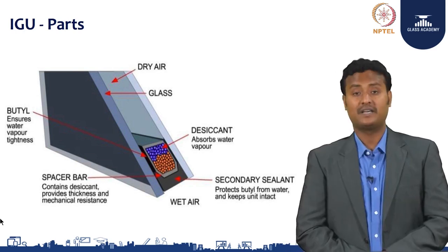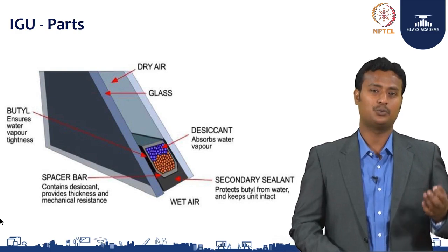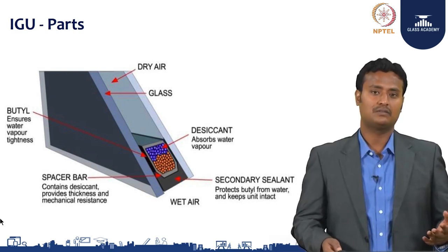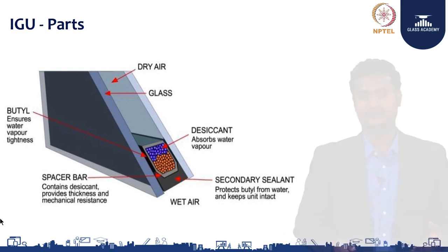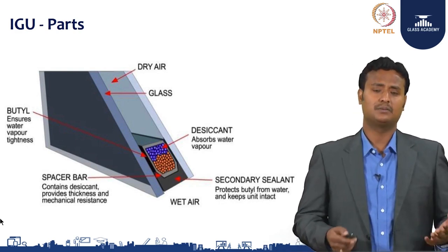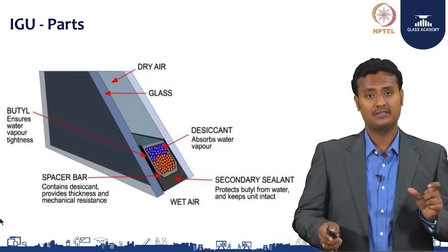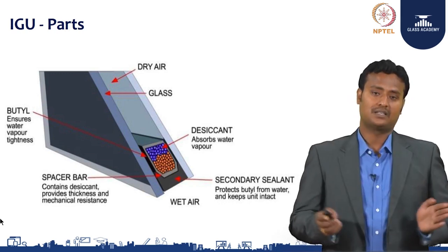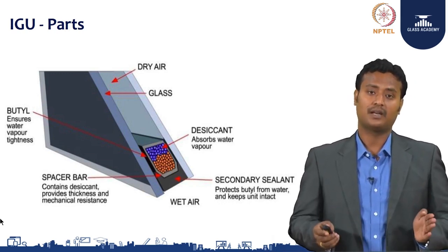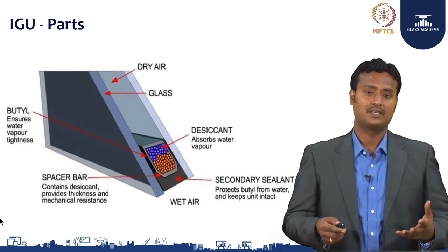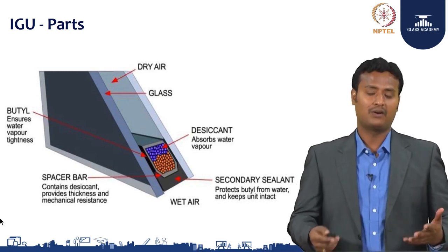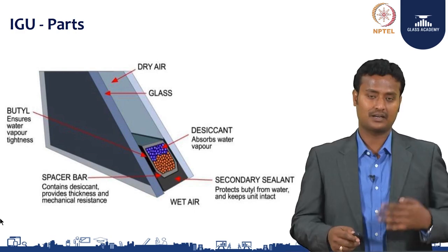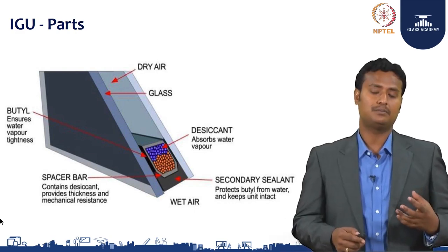Next is the spacer. It is an aluminum spacer — a hollow spacer that does not weigh much compared to the glass, but has a lot of quality. It gives mechanical strength and separates the two glass panes, ensuring there is no sagging effect. It helps separate the glass panes in a proper manner. Inside the spacer, we fill the desiccant, which has an important impact on the condensation effect.